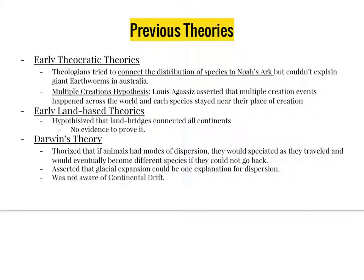Then, Luis Agassiz asserted that multiple creations happened all over the world. He hypothesized that animals were immutable and static, meaning they would stay near their origins of creation. However, while on his voyage, Darwin found fossilized seashells in the high peaks of the Andes, proving that animals didn't stay near their origins of creation. Later, biologists said that land bridges connected all the world's continents, but could never prove their claims. It was Charles Darwin who theorized that if animals had a means of moving over where water currently is, and were blocked from returning to their place of origin, then speciation through dispersion would occur. Though he had no notion of continental drift, his theory proved to be correct to an extent.